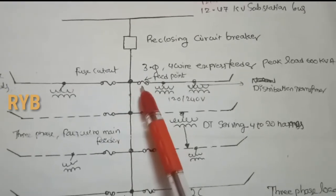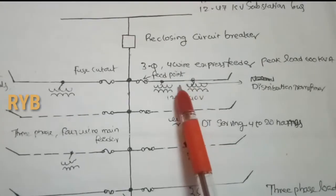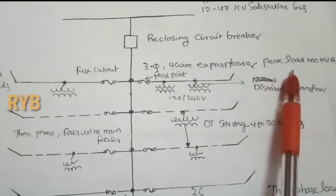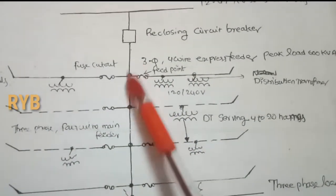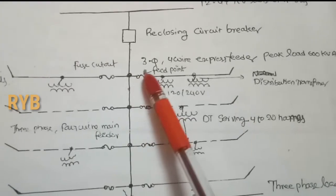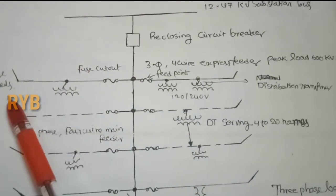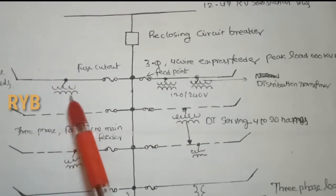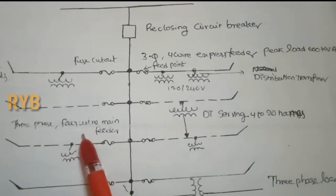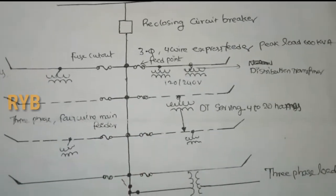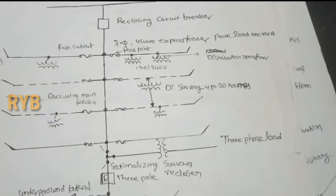Fuse cutouts are provided for branches. Distribution transformer locations are shown along the feeder. A three-phase four-wire express feeder with a peak load of 600 kVA comes directly to the load center without any tapping — this is called an express feeder. Two-phase and single-phase laterals are also shown, along with distribution transformer locations, completing the diagram representation of the primary distribution feeder.